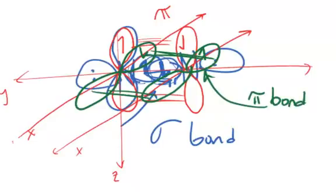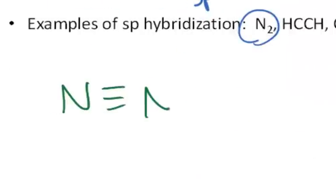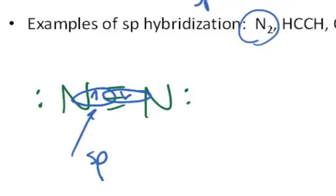So the three bonds in nitrogen could be explained this way. The geometry, if you will, it's linear, it's just a little diatomic molecule, but is composed of one sigma bond due to the overlap of the sp orbitals along the axes here.